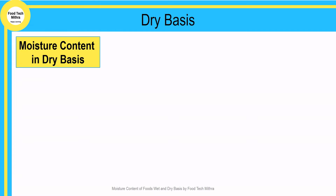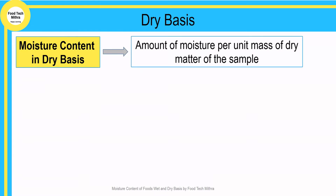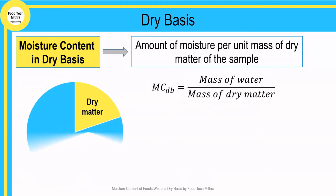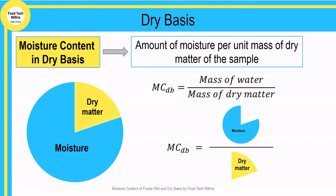Moisture content on a dry basis is the mass of water per unit mass of dry matter of the sample. Considering the same whole mass of a sample as earlier, moisture content on a dry basis is calculated as the mass of the moisture portion divided by the mass of the dry matter. So the denominator differs in both representations.